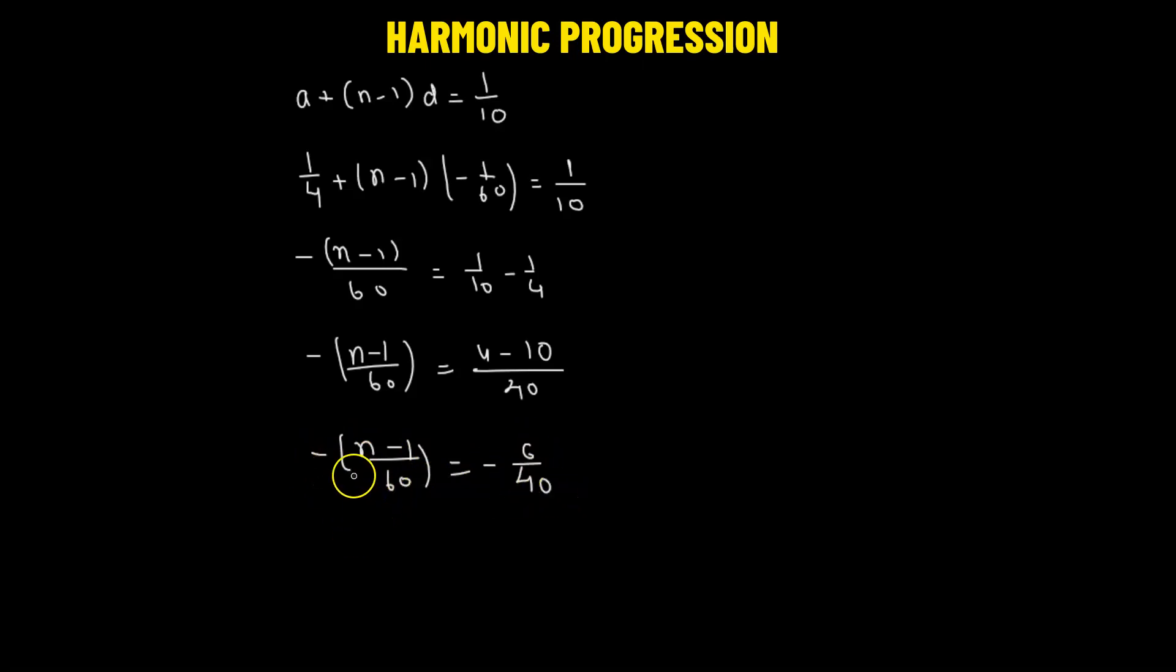We can factor out negative from both sides by multiplying with negative 1, and we have n minus 1 equals to 6 times 60 divided by 40. So here we can factor out the 0. 2 times 2, 2 times 3, 2 times 3. So n minus 1 will be equals to 9. So that means solving for n, we get 10.